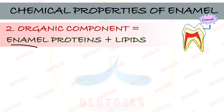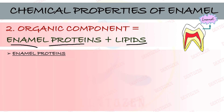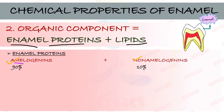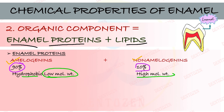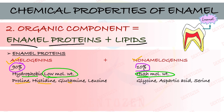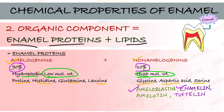The organic component is mainly proteins called enamel proteins, unique to enamel, plus some lipids. Enamel proteins are of two types: amelogenins and non-amelogenins. Amelogenins make 90% of enamel proteins and are hydrophobic, low molecular weight proteins. Non-amelogenins are only 10% and are high molecular weight. Important non-amelogenins include ameloblastin, enamelin, amelotin, and tufelin.